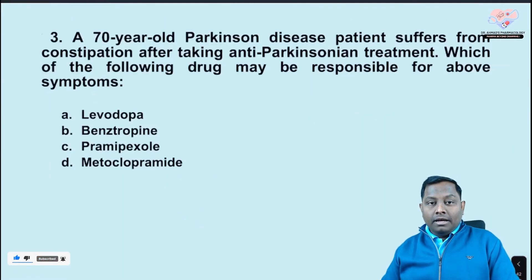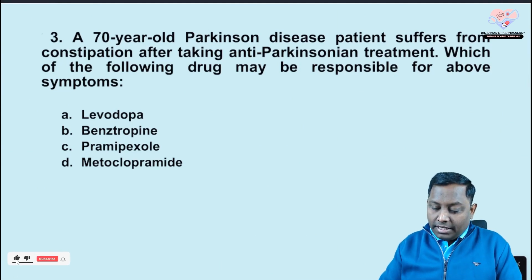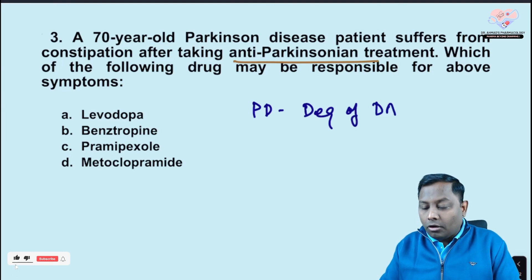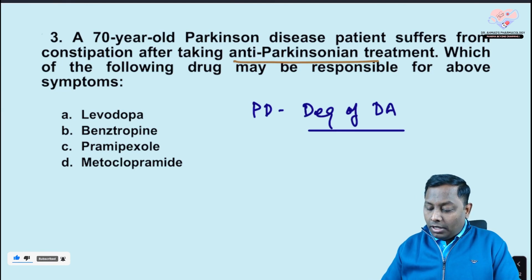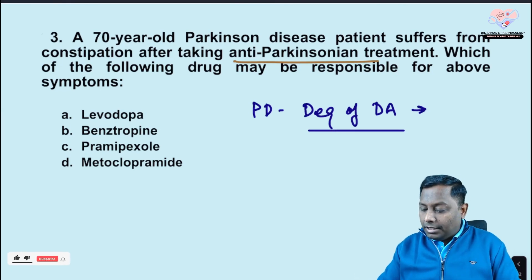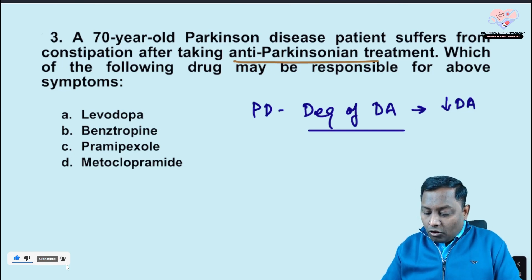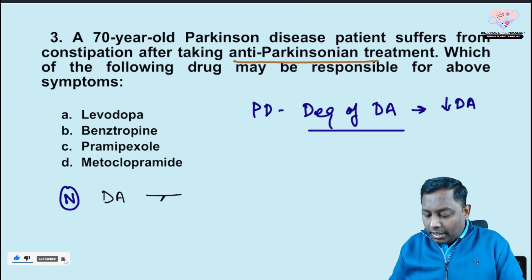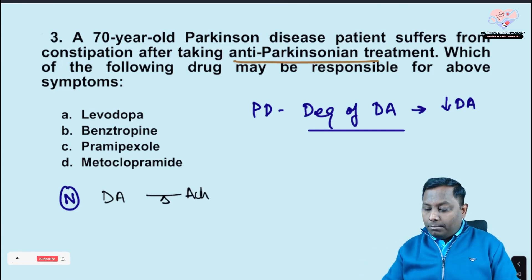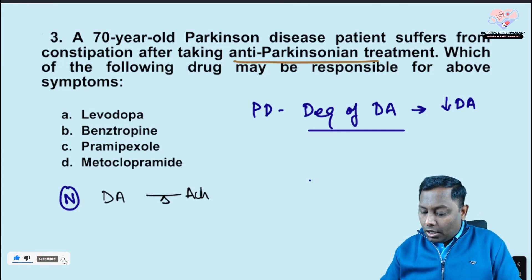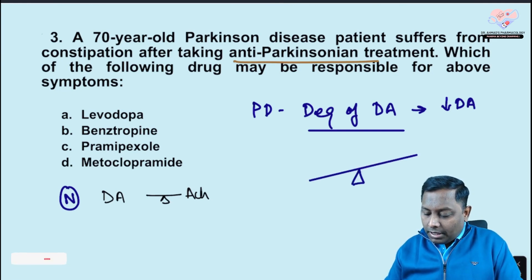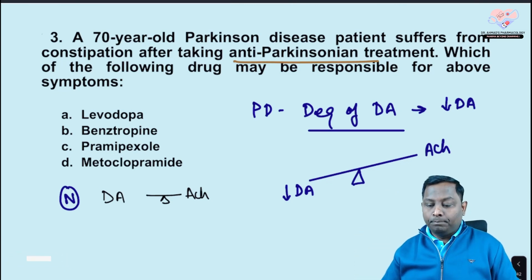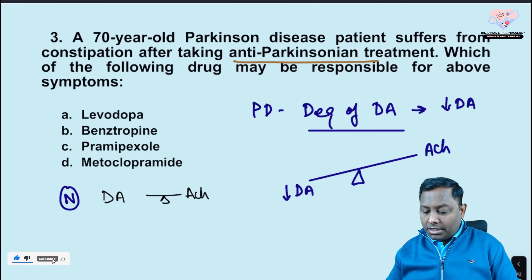Third question: a 70-year-old Parkinson's disease patient develops constipation after taking an anti-parkinsonian drug. In Parkinson's disease, dopaminergic neurons degenerate, leading to decreased dopamine. In a normal person, dopamine and acetylcholine are balanced, but in Parkinson's, decreased dopamine means acetylcholine is relatively elevated.